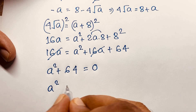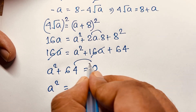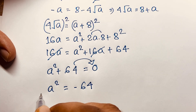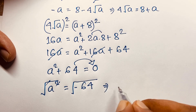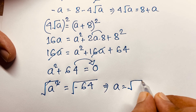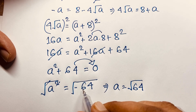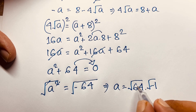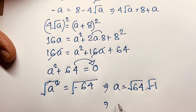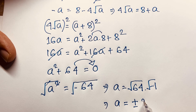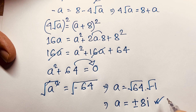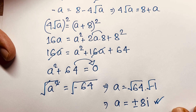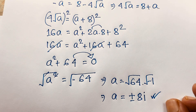Then A² equals negative 64 after moving 64 to the other side. I take the square root of both sides. The square root cancels on the left giving A, and on the right we get square root of 64 times square root of negative 1. So A is equal to plus or minus 8. Since square root of negative 1 is i, we find A equals plus or minus 8i. This is our final solution to this maths Olympiad question.